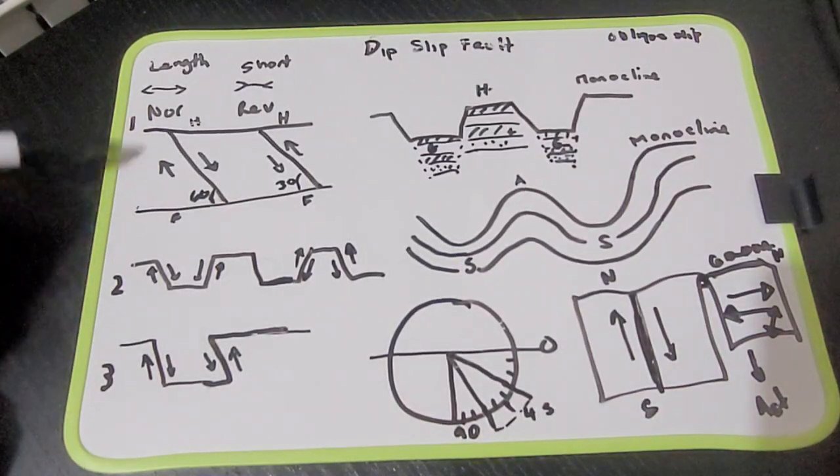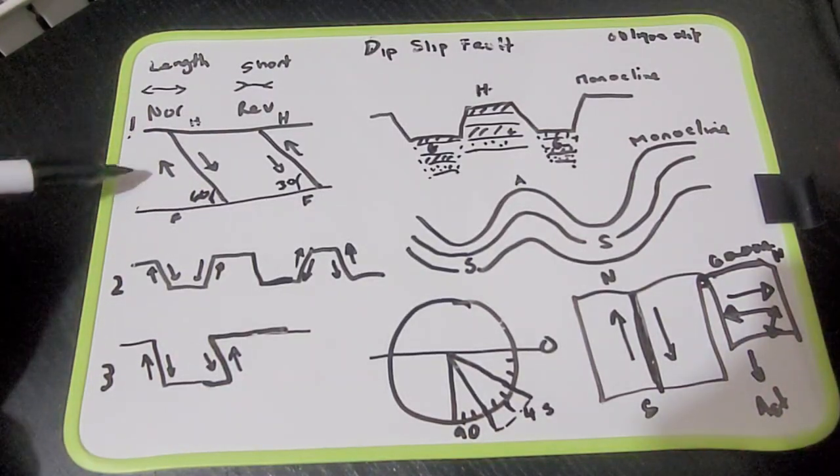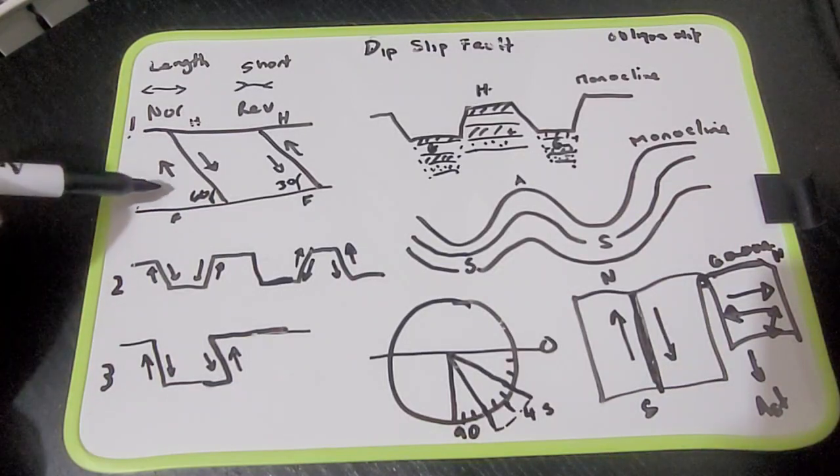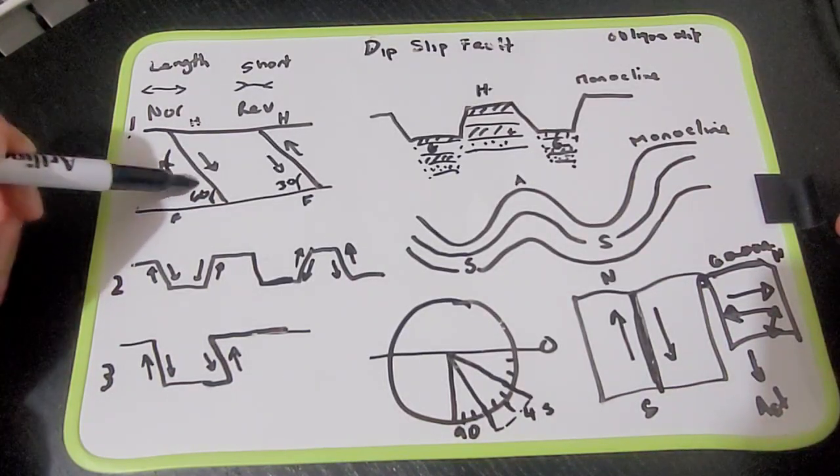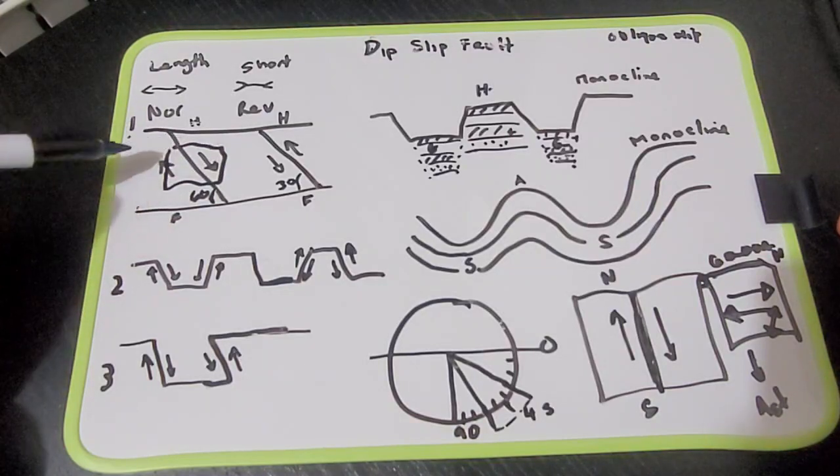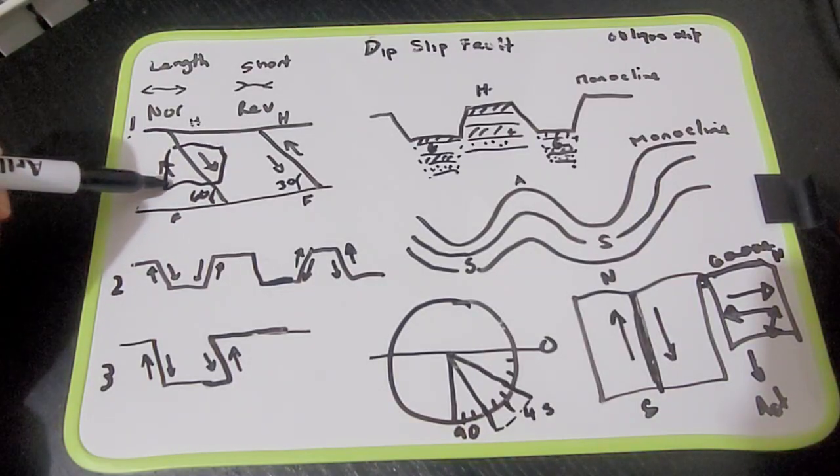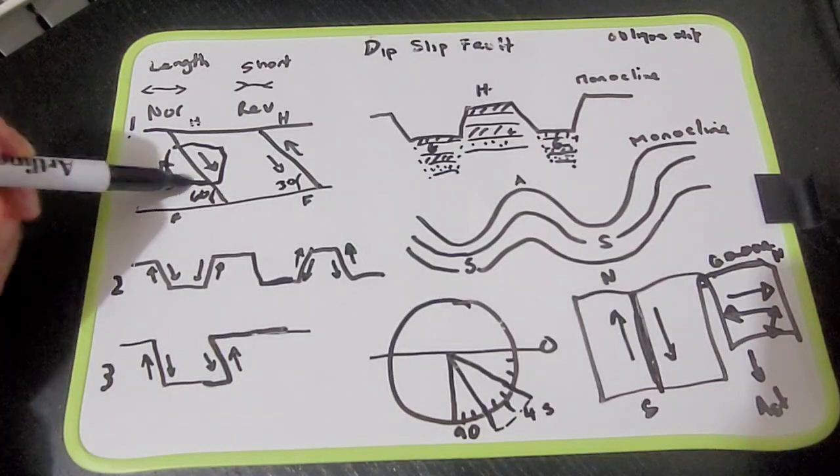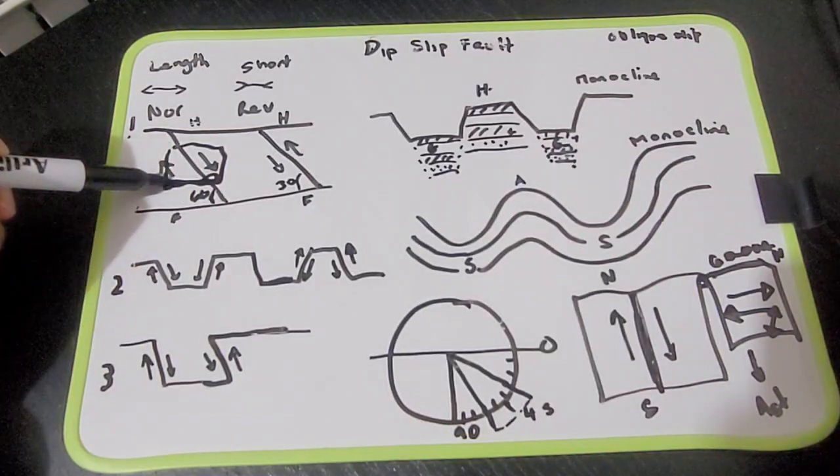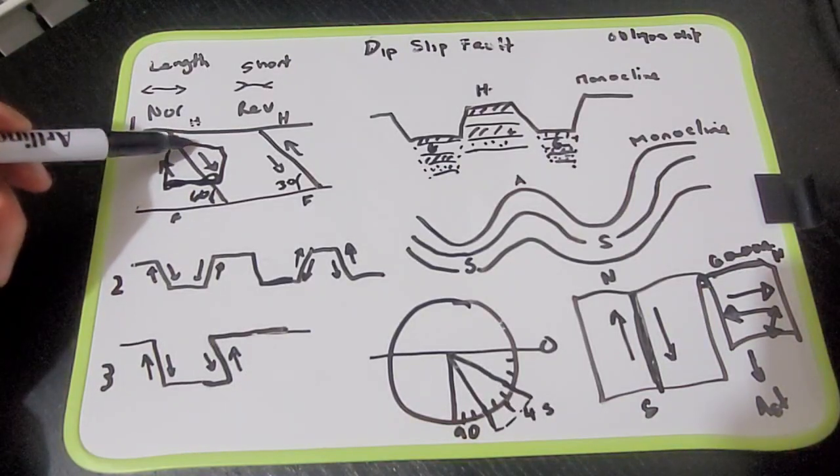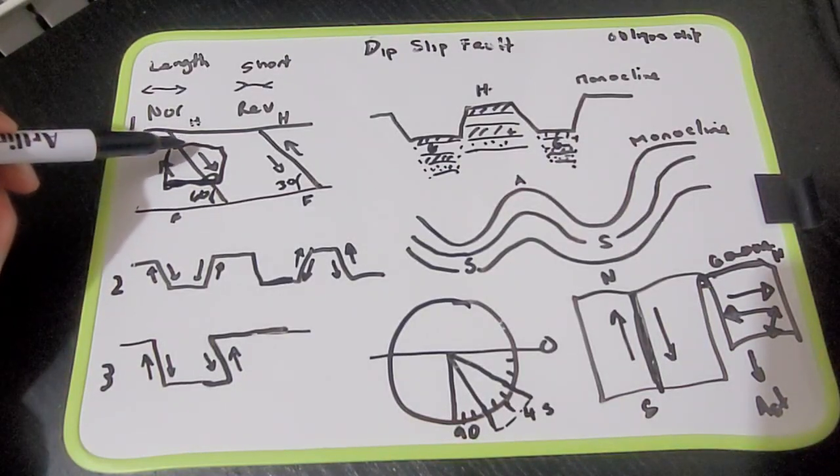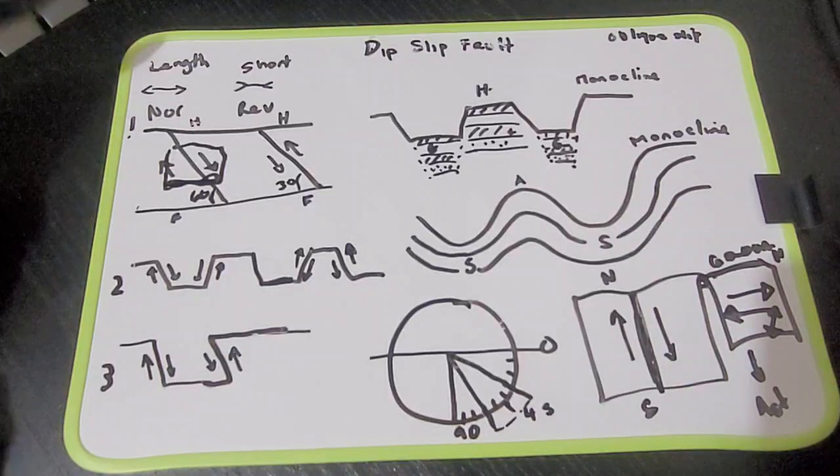And that's where we have the first graph. So we have the normal fault in which we have a foot wall. A foot wall, if we draw a mine shaft on this side where you're going to walk, you're going to walk down here. So that's the footwall. And the hanging wall is the wall above, so it's the roof of the actual mine shaft. That's where that concept comes in.